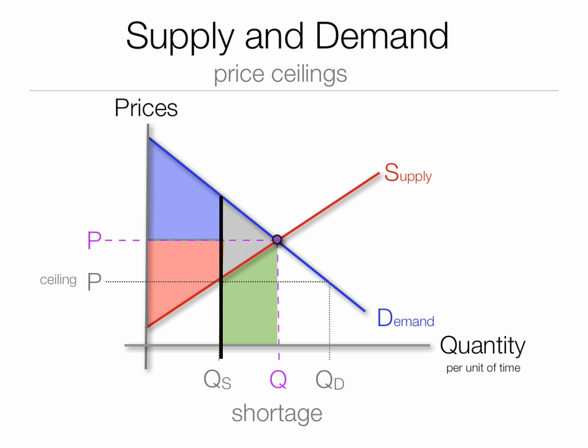The light green area represents those individuals who used to have the product or service but no longer have it. There is a deadweight loss to society represented by the gray area — this means consumers aren't benefiting and producers are not benefiting. The purple area represents a shift of surplus from producer to consumer.